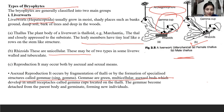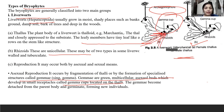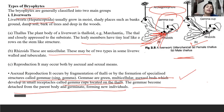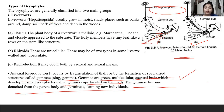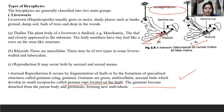These are gemmae cups, which I will show you here. In these gemmae cups, gemmae are produced which are green, multicellular, and asexual. These are the same structures which detach from the parent body when they are mature.